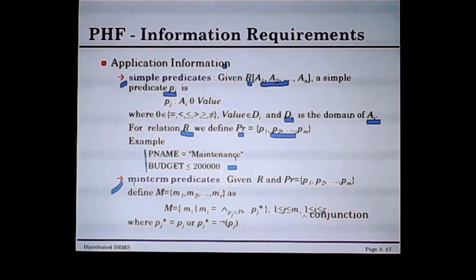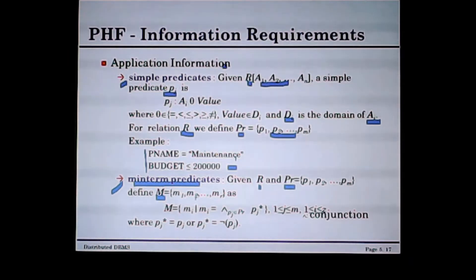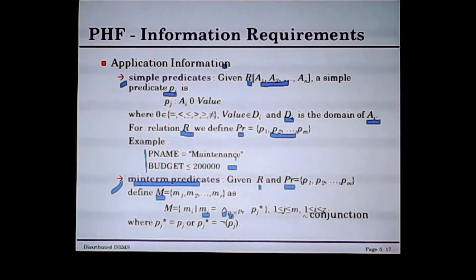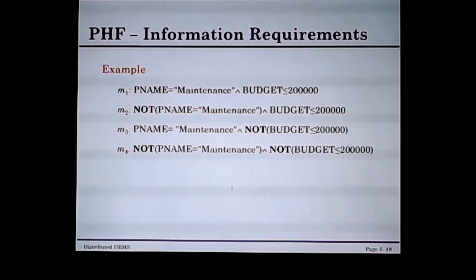Now I go to minterm predicate. A minterm predicate of relation R is defined over a set of simple predicates PR. We define a set of minterm predicates m1, m2, ..., mr. A minterm predicate is a conjunction of simple predicates, where pj* may be pj (a simple predicate) or NOT pj.